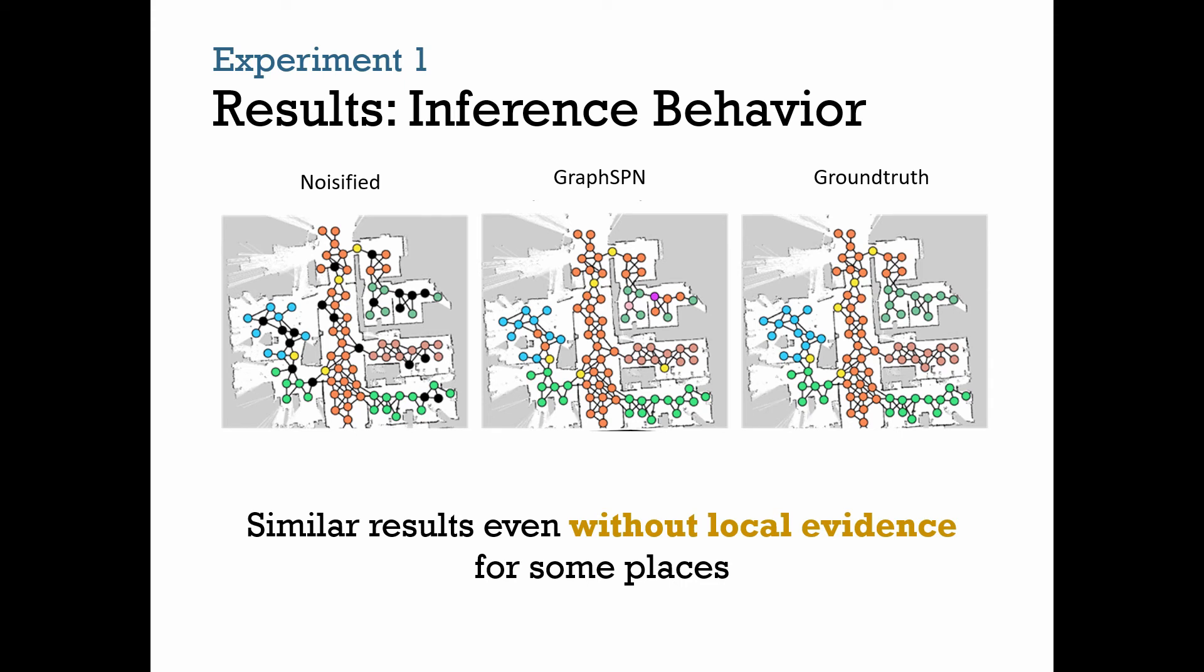Here is an example of inference behavior by Graph SPN. The input graph on the left is noisified, where black nodes have incorrect local evidence. Comparing with the ground truth, we can see that Graph SPN can correct a lot of the misleading evidence, while in fact increasing confidence for remaining evidence. Note that the nodes are classified by the most likely classes in the output. We observe similar results even when some places on the graph have missing local evidence.